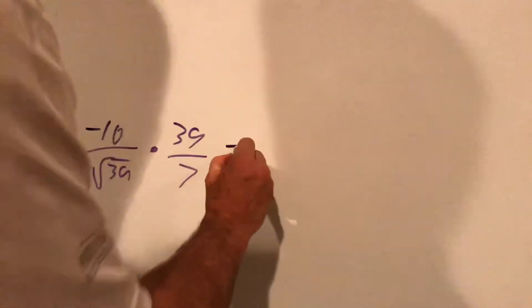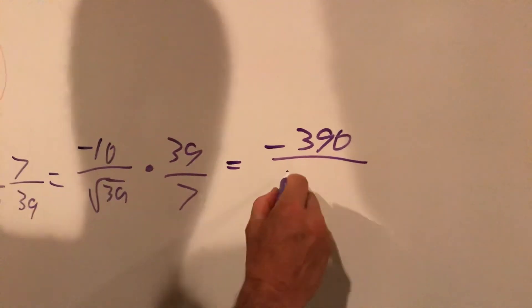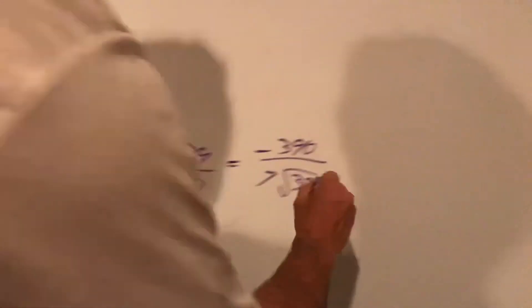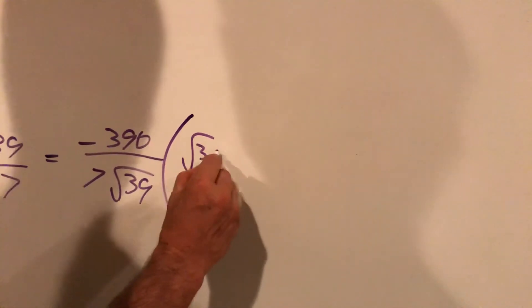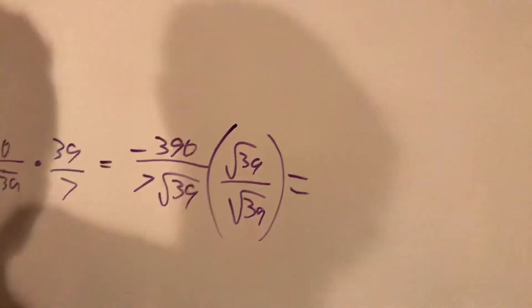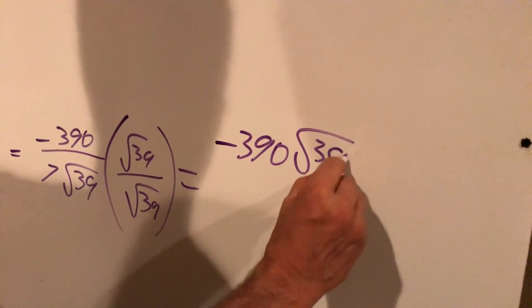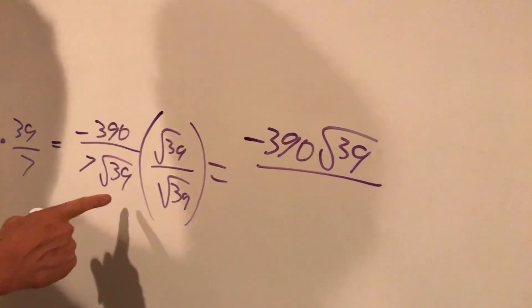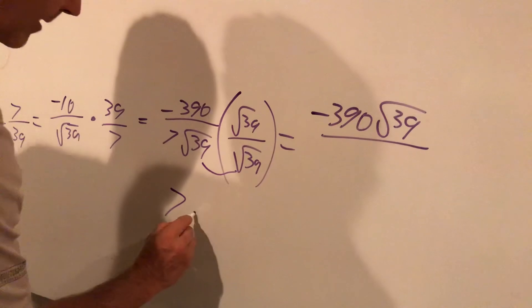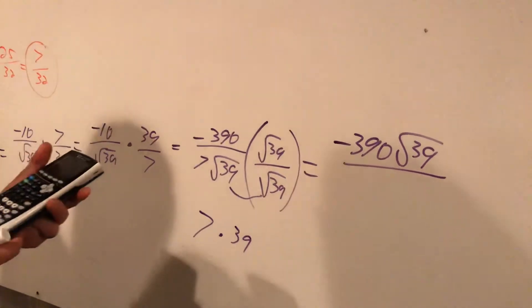And this is going to get me negative 390 over 7 root 39. It's pretty messy. I've got to clean that root 39. So I multiply by that root 39 over root 39. And that'll get me my answer here, which is going to be negative 390 root 39 over, and this will be a 7. These two, root 39 times root 39 makes a regular 39, and 7 times 39.